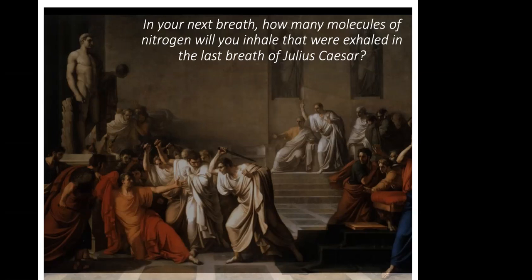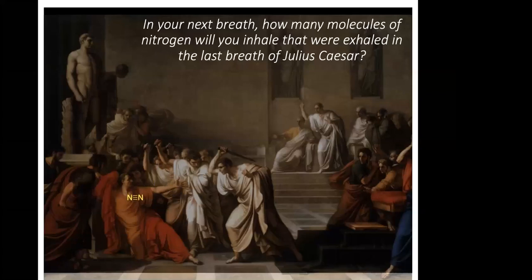Caesar's last breath contained about 10^22 molecules of air, most of which were nitrogen. Nitrogen is a very stable molecule—it moves quickly through the atmosphere, and within a few months all of the nitrogen molecules from Caesar's last breath were evenly distributed throughout the atmosphere. Nitrogen is very slow to react and the average nitrogen molecule persists in the atmosphere for at least a million years. So how many molecules in Caesar's last breath will be in your next breath? The calculation tells us that roughly one molecule you inhale will have been in Caesar's last breath.